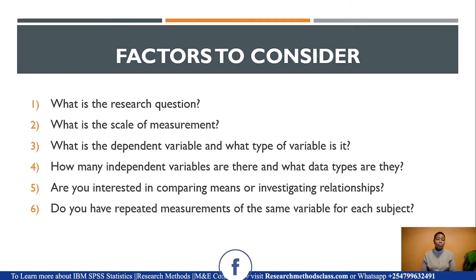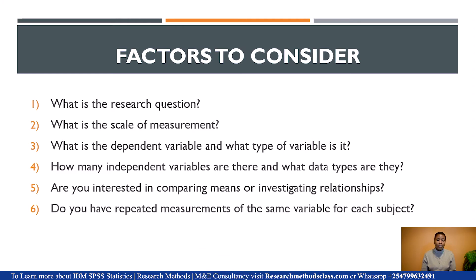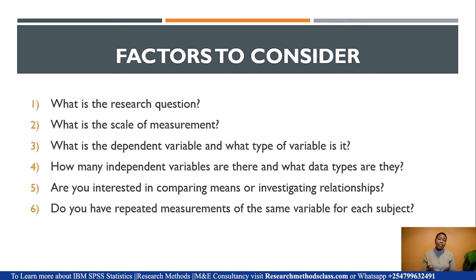The fourth factor is: how many independent variables do you have and what data types are they? Think about regression — simple linear regression is used when you have one independent variable and one dependent variable, but multiple regression is used when you have more than one independent variable. The fifth factor is: are you interested in comparing means or investigating a relationship? When comparing means, you think about the t-test; when investigating a relationship, you think about correlation; and when you want to predict, you think about regression.